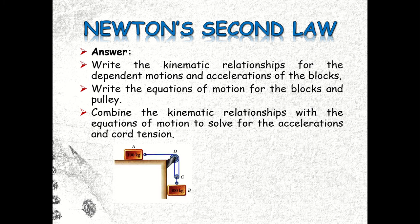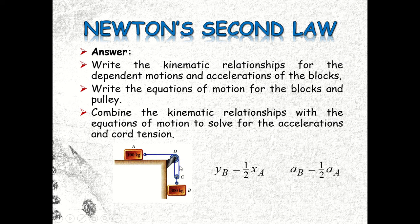Looking at the illustration, we have one pulley holding block A, and for block B we have only one chord supporting it, while there are two chords supporting block A. So we can relate these into the relationship that xB is equal to one half of xA.